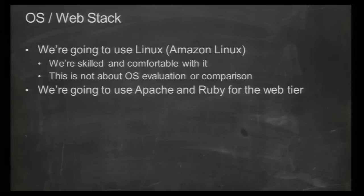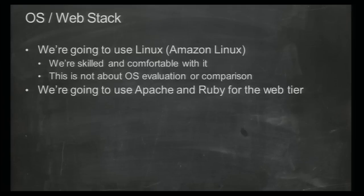For operating system and web stack, this was really a question of what we were comfortable with. We chose Amazon Linux as our OS, and Apache and Ruby for our web stack. We could have easily chosen Microsoft technologies like .NET and IIS, or a Java stack, but the decision was about what we were truly comfortable with.